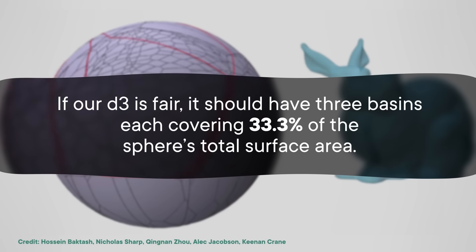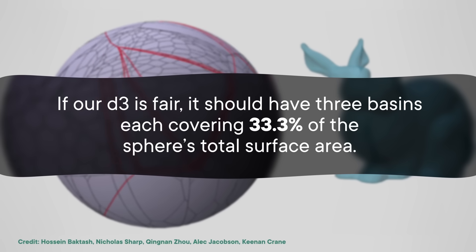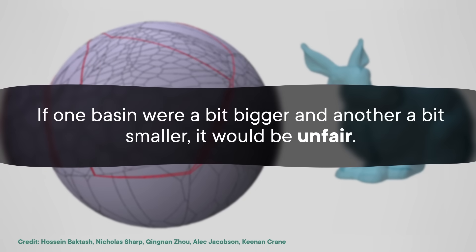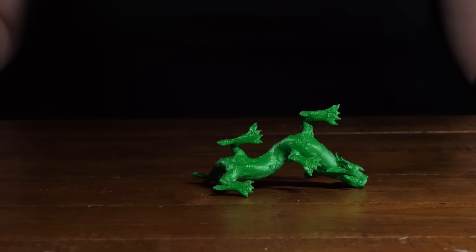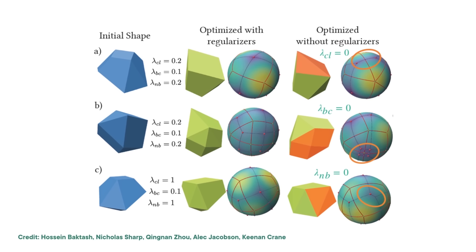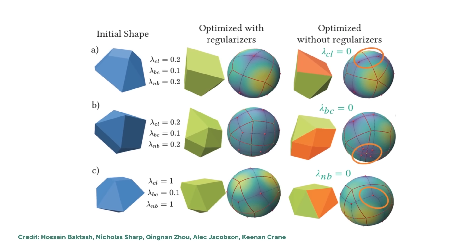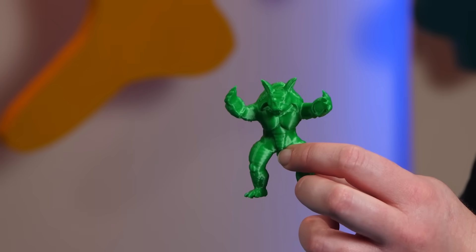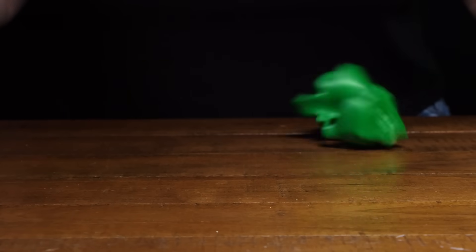To determine how likely it is for our die to land in each possible orientation, we divide the Gauss map into basins, each corresponding to a single outcome. The probability of landing on one outcome is just the fraction of the area that basin covers on the sphere. If our D3 is fair, it should have three basins, each covering 33 and a third percent of the sphere's total surface area. According to the research team, the dragon they designed is indeed fair using these Gauss maps, and they also 3D printed the die and verified its fairness by rolling it 400 times.